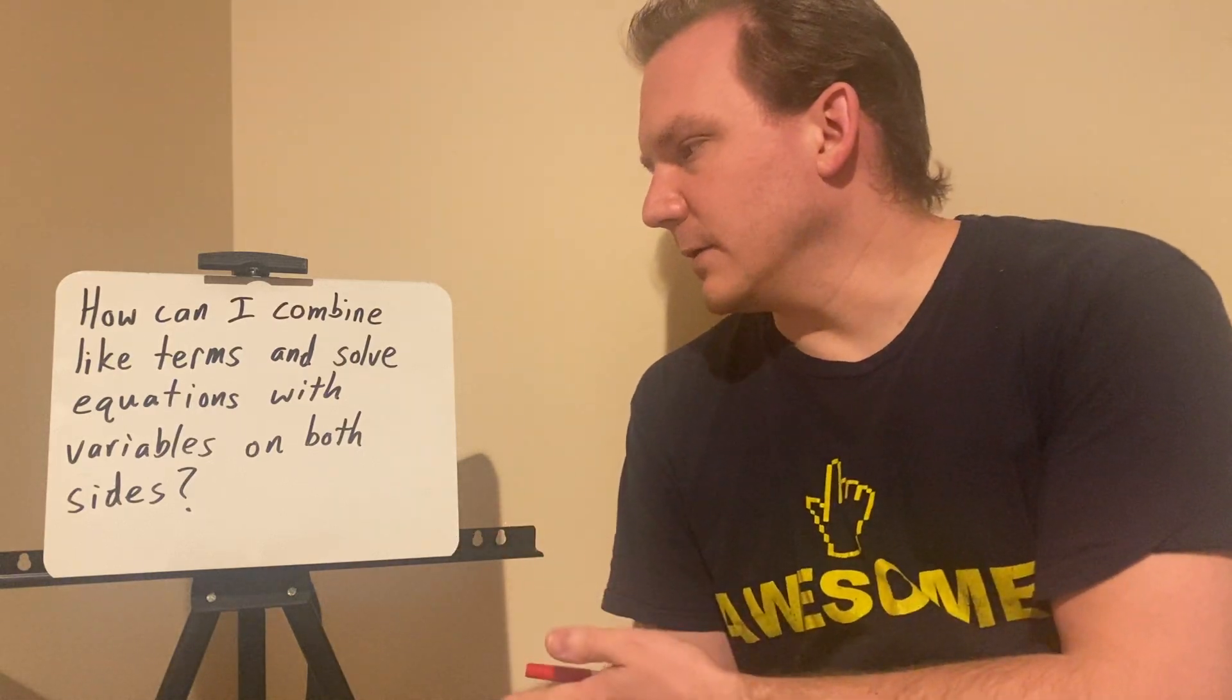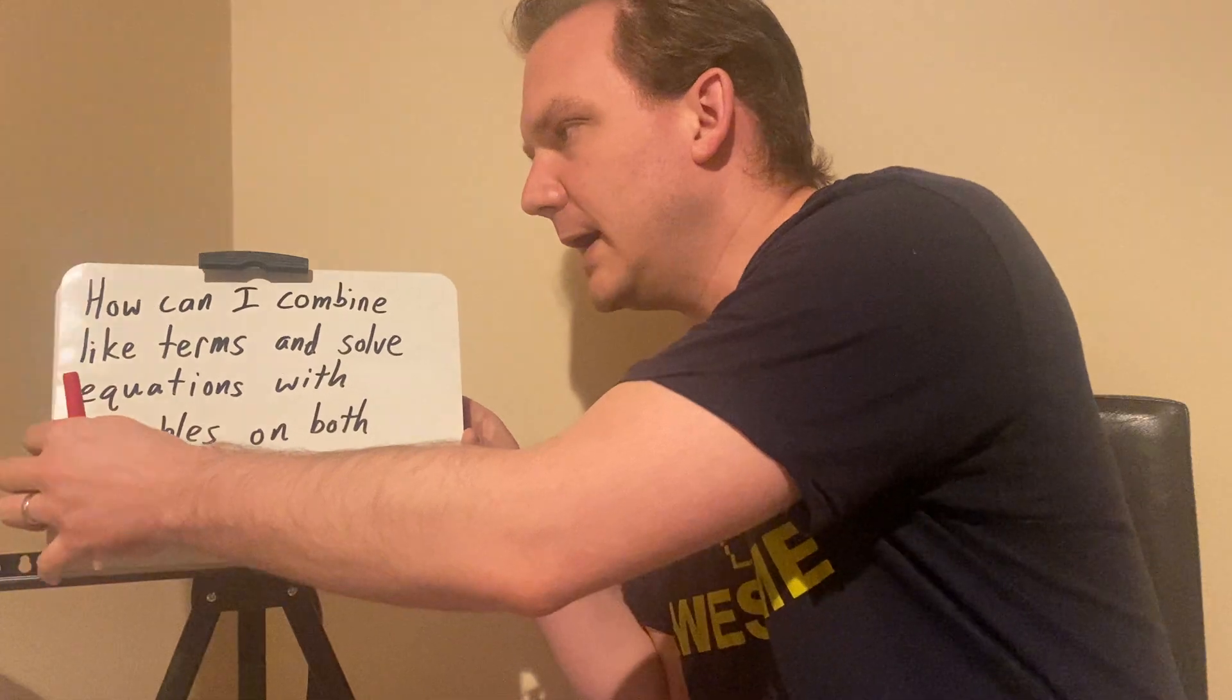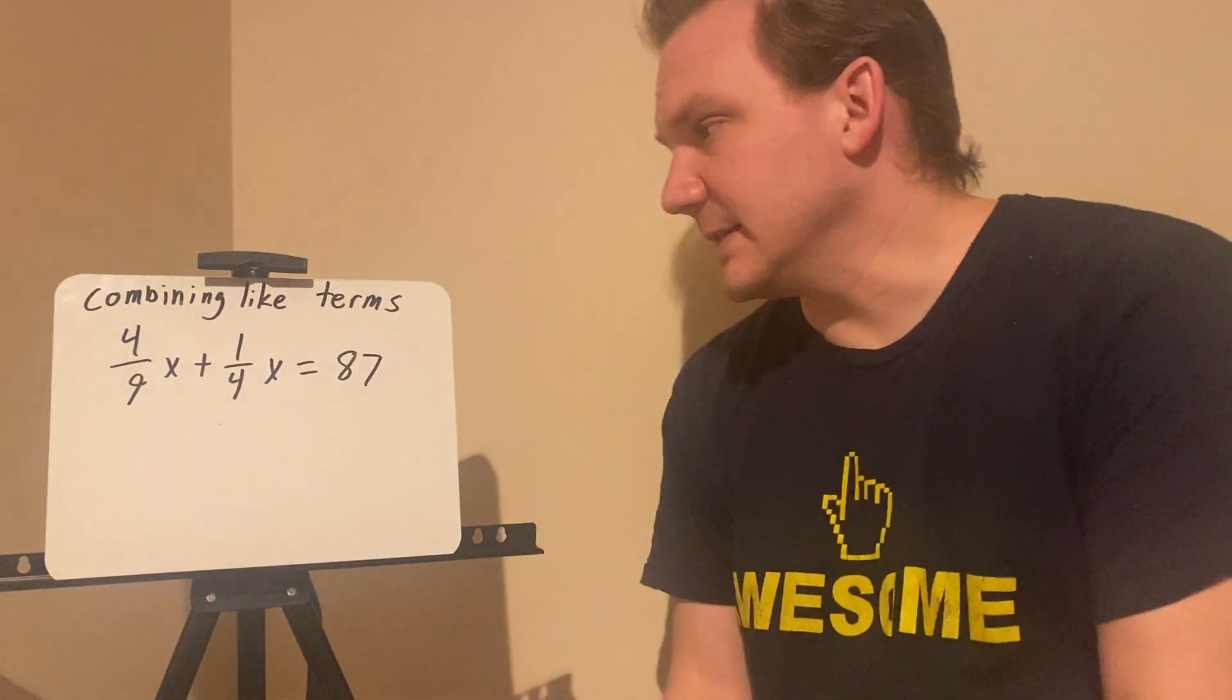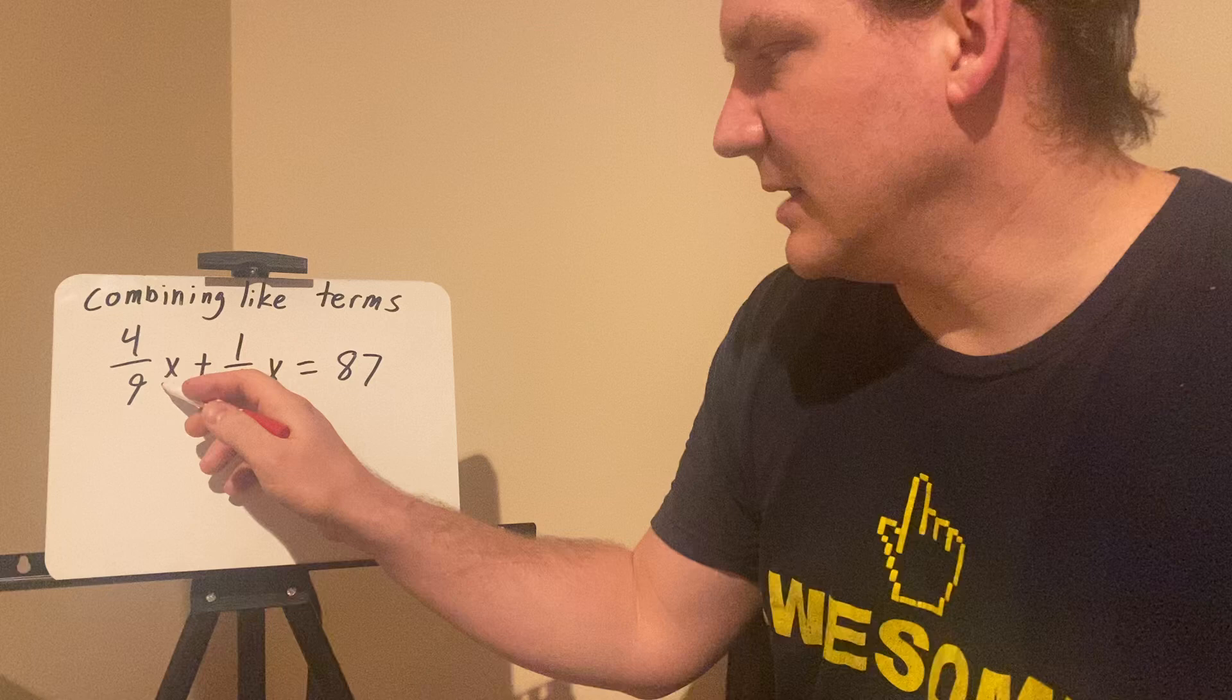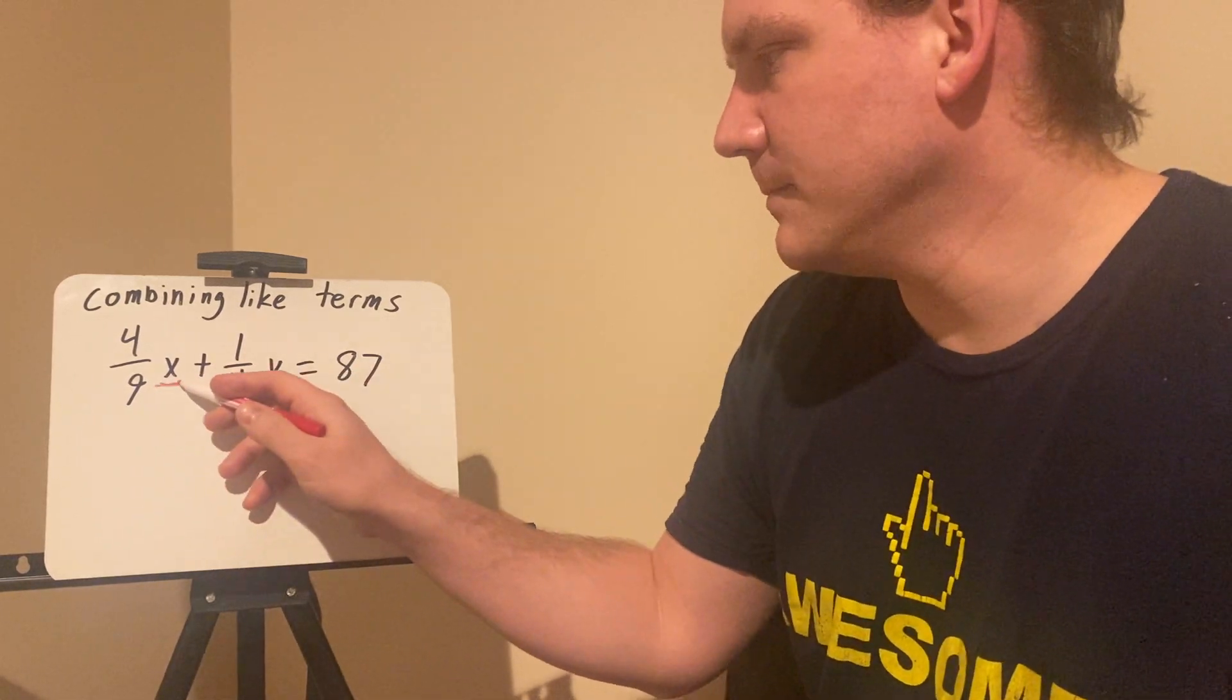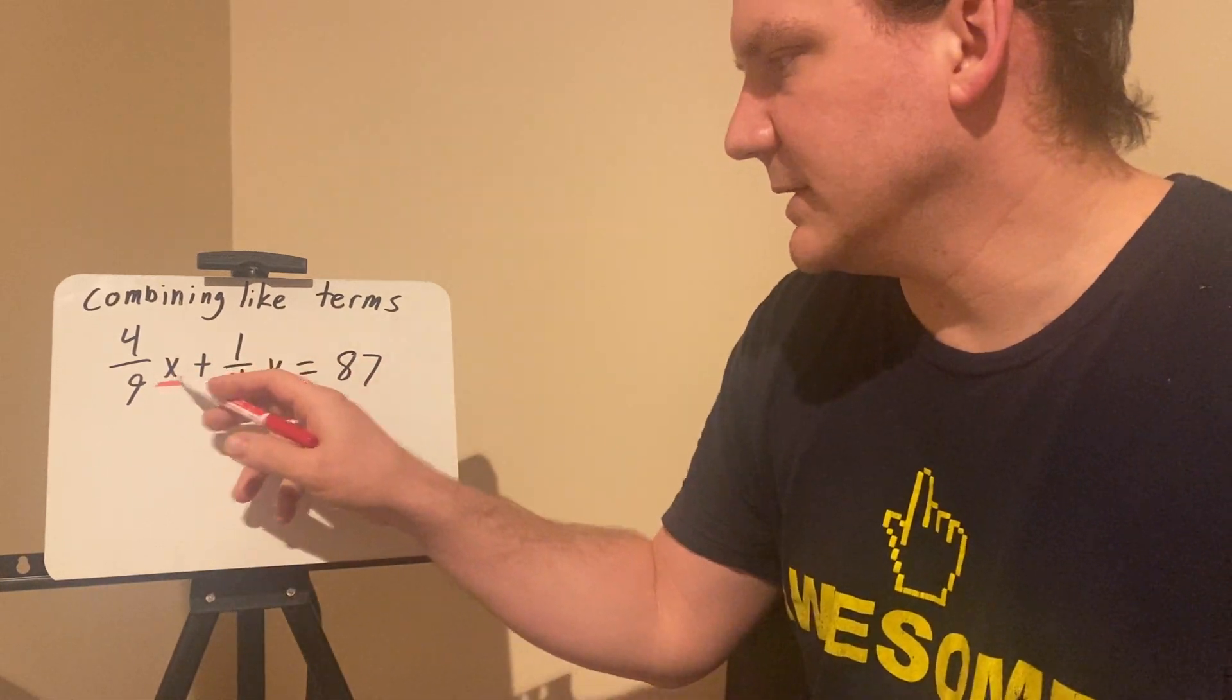How can I combine like terms and solve equations with variables on both sides? What we're looking at in this lesson is combining like terms. That means if I have two terms with the same variable or a lack of variable, two constant terms that are the same, these two terms have a variable x.